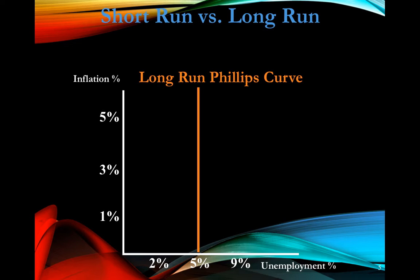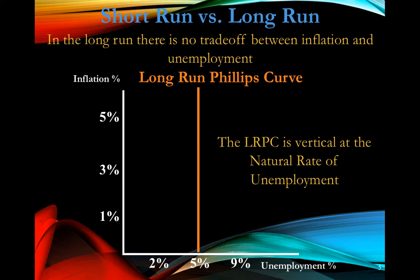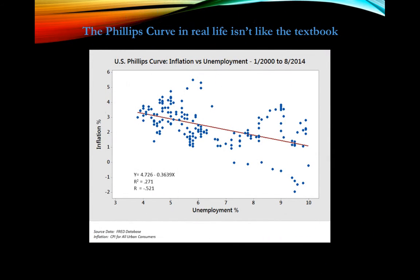Let's look at the long-run Phillips Curve. Just like our long-run aggregate supply graph, the long-run Phillips Curve is vertical at the natural rate of unemployment. In the long run there is no trade-off between inflation and unemployment — just like on our AD/AS graph, in the long run there is no trade-off between output and price level. Prices can rise but output remains at its equilibrium level. In real life the Phillips Curve is not so neat; when you plot the data over time it's not that clean curve. For now, just concern yourself with this basic relationship.